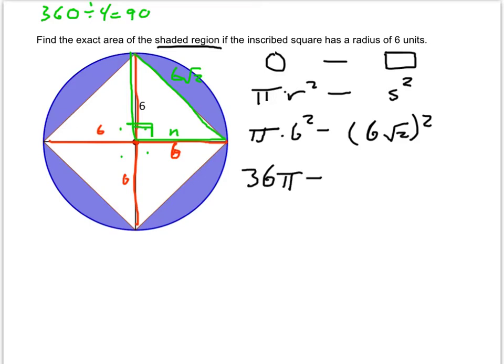Now, take care here. 6 root 2 squared is 6 times root 2 squared, which squares both 6 and root 2. And so we have 6 squared times the square root of 2 squared.